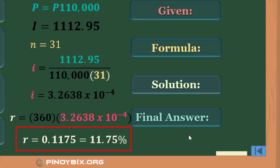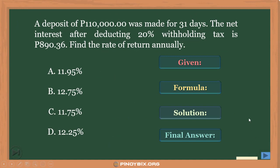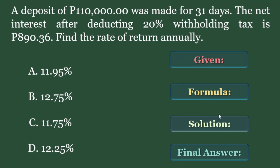Let's check against our options to see which is the correct answer. 11.75% corresponds to Letter C — that is our answer.